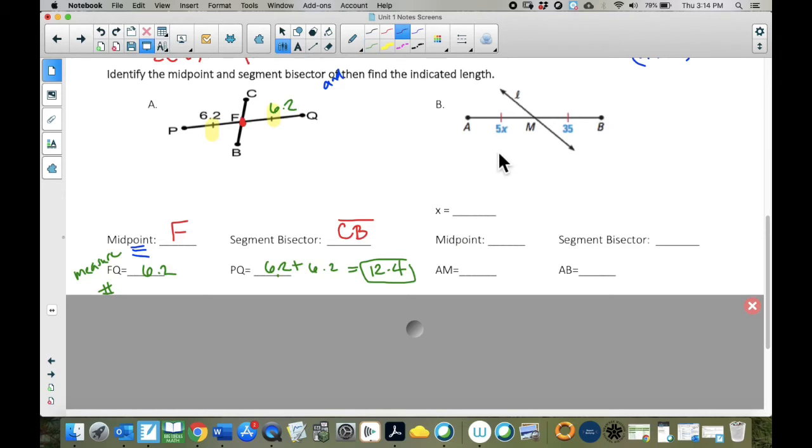Part B, similar thing. We have the hash marks here. Those hash marks tell us that those are congruent to each other. So that's important. If they're congruent, then we could say that 5X is equal to 35. Right? They're equal to each other. They're congruent. Their measures are equal. Because the first question is, what is X? Okay, so if I divide by 5, then I get X equals 7. So 7 is my answer here. X is 7.